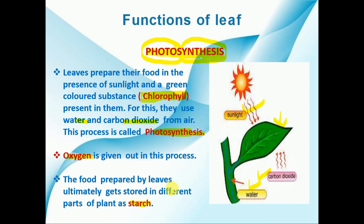Chlorophyll, photosynthesis, and starch are very important terms, and you should know about them. This is all about the functions of the leaf — we discussed two important functions: transpiration and photosynthesis. That is all about the second important part of your shoot system, that is your leaves. In the coming videos, we will learn about the next important parts of your shoot system. Thank you and have a great time.